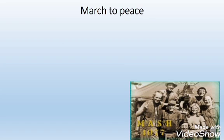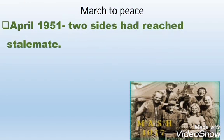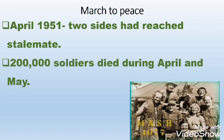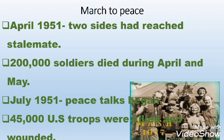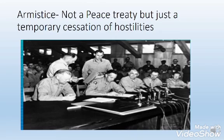The last stage led to a slow, agonizing march to peace. By April 1951, the two sides had reached a stalemate. 200,000 soldiers died in an unsuccessful push south during April and May. Peace talks began in July 1951, but no ceasefire was agreed. Between the beginning of peace talks and November 1952, over 45,000 US troops were killed and wounded. There was an armistice signed by North Korea, China, and the UN, but not by South Korea. The armistice was not a peace treaty, but just a temporary cessation of hostilities.